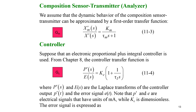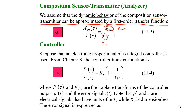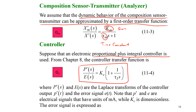Let's assume the dynamic behavior of the composition sensor or transmitter can be approximated by a first-order transfer function, where one parameter is the gain and the other is the time constant. For the controller, let's say we have a proportional plus integral (PI) controller, and we'll use that as our G-controller. These are in the Laplace domain.